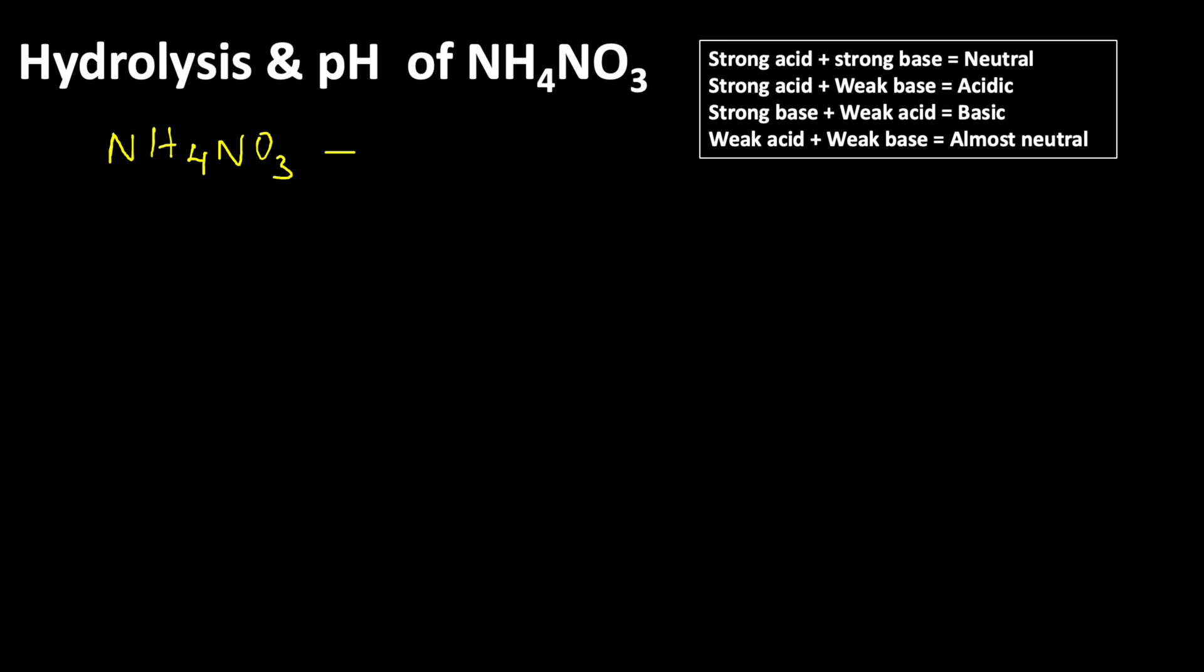Ammonium nitrate is formed by the combination of ammonium hydroxide, which is a weak base, and nitric acid, which is a strong acid. So weak base plus strong acid. For the combination of strong acid and weak base, the resulting solution is acidic.